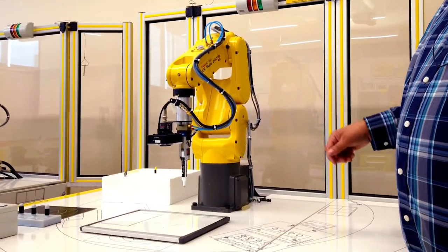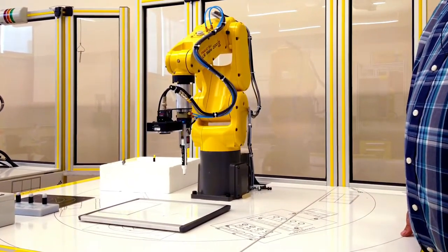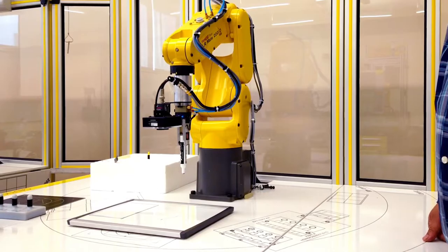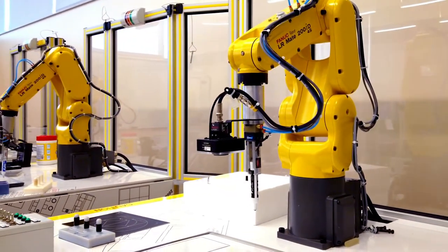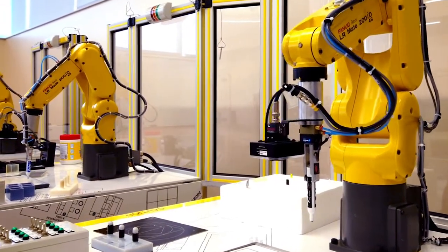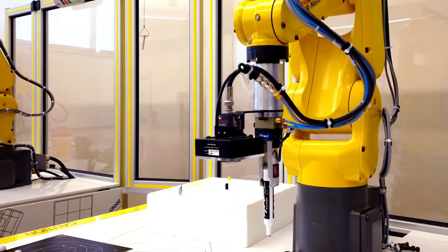These are our FANUC robots and our students at Ivy Tech have the opportunity to learn how to program these. This includes learning positioning movements and creating repeating programs. In addition, students learn how to use the vision system with the FANUC robots as well.